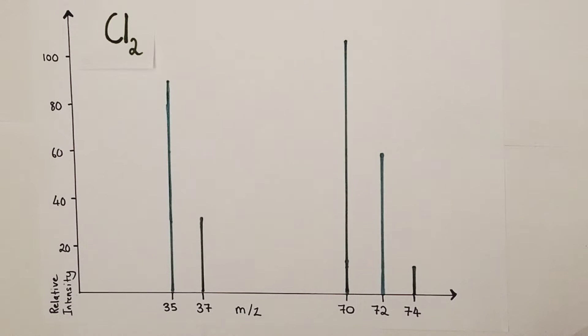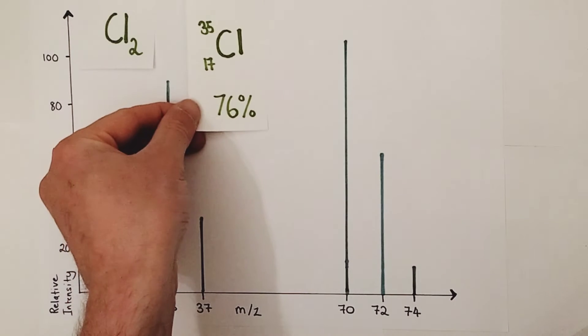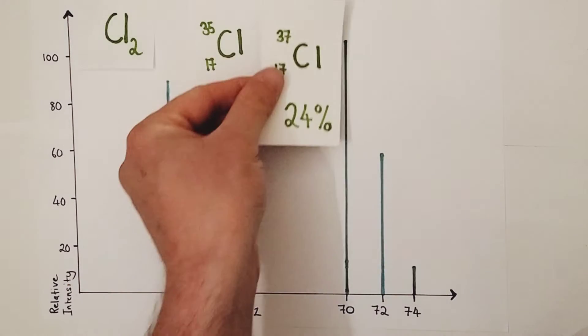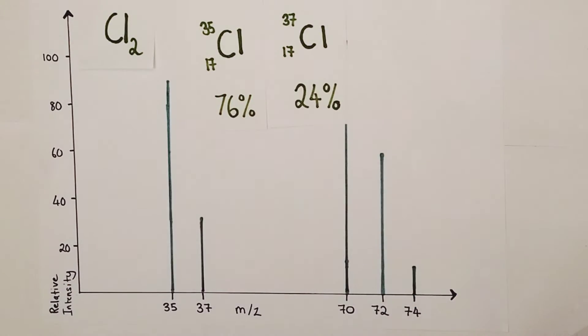On planet Earth about 76% of all chlorine atoms found have the mass number 35 - 17 protons and 18 neutrons in the nucleus. But a smaller proportion, about 24% of all the chlorine on planet Earth, are chlorine-37, a different isotopic form of chlorine with 17 protons and 20 neutrons and a mass number of 37. They are slightly heavier atoms of chlorine.